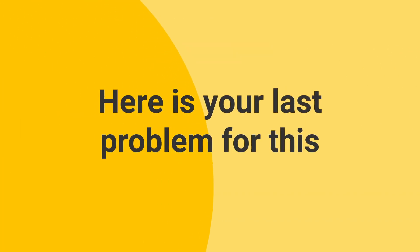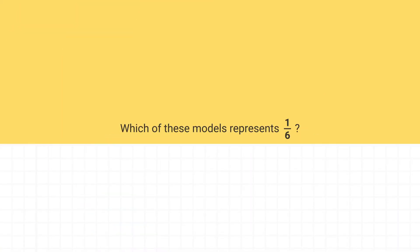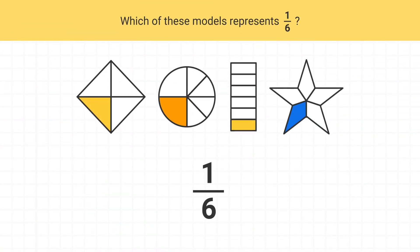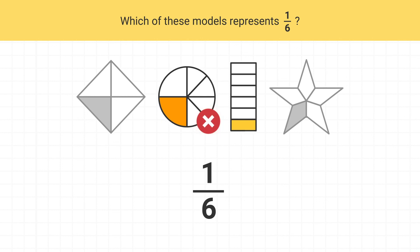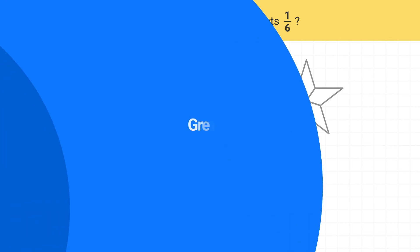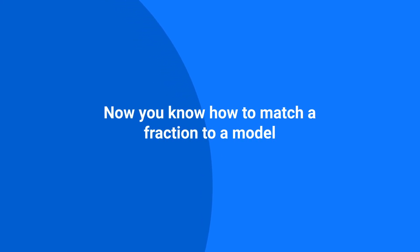Now here is your last problem for this video. Which of these models shows 1 sixth? We can first look for models that have 6 pieces. This model has 4 pieces and this one has 5, so neither of those can be correct. While the remaining models have 6 pieces, we can immediately cross off this model because all of the pieces are not the same size. That means this model is the only one that can be correct, and we can see that 1 piece out of 6 is shaded. Now you know how to match a fraction to a model.